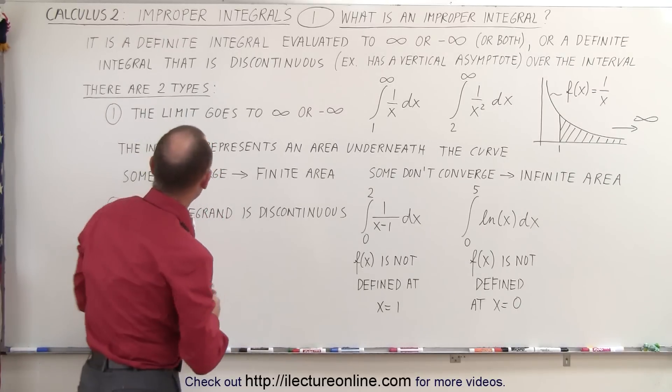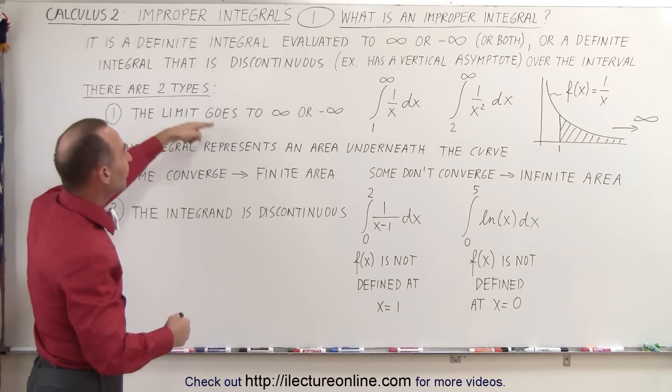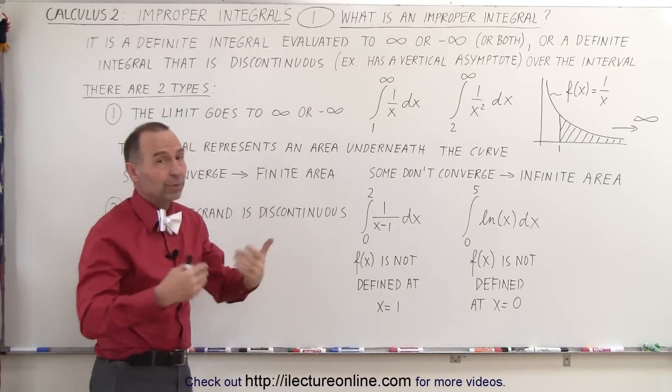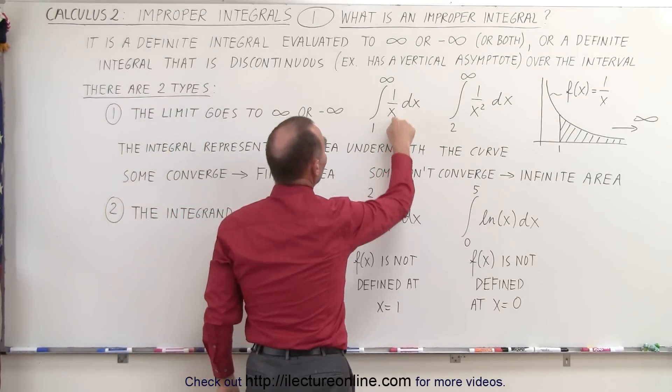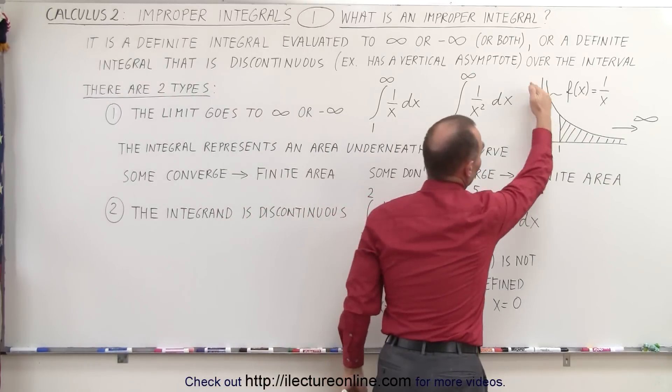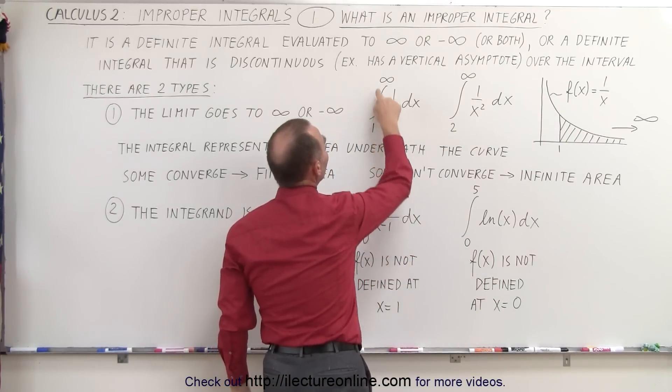So there's therefore two types. Let's take a closer look at the first type where the limit goes to either infinity or negative infinity or potentially both. So we have an integral here of 1 over x dx. And here's the graph of what that looks like. And we want to evaluate it from 1 to infinity.